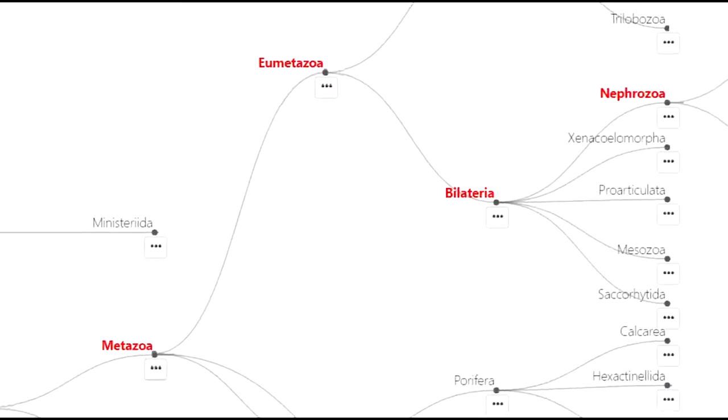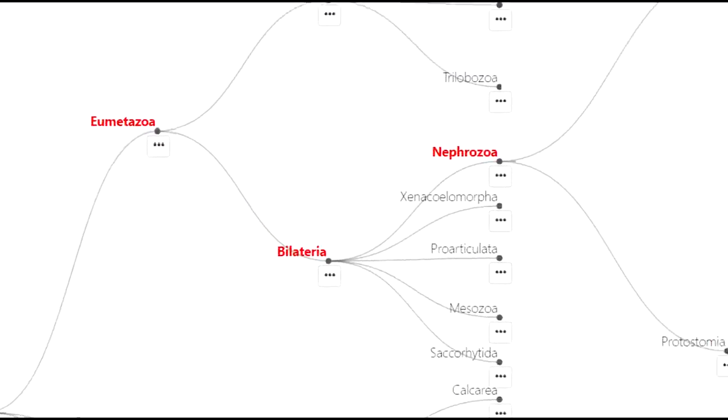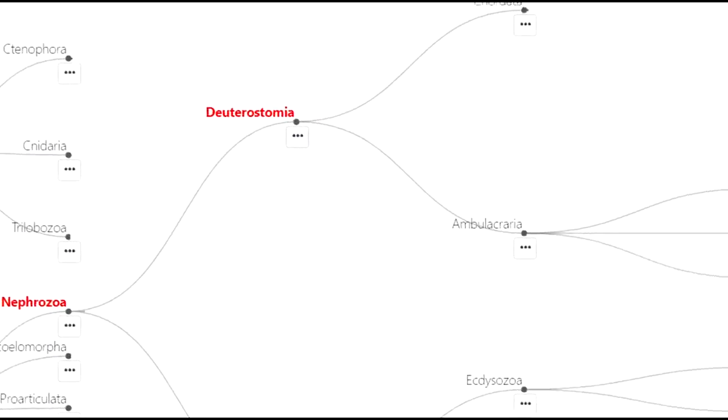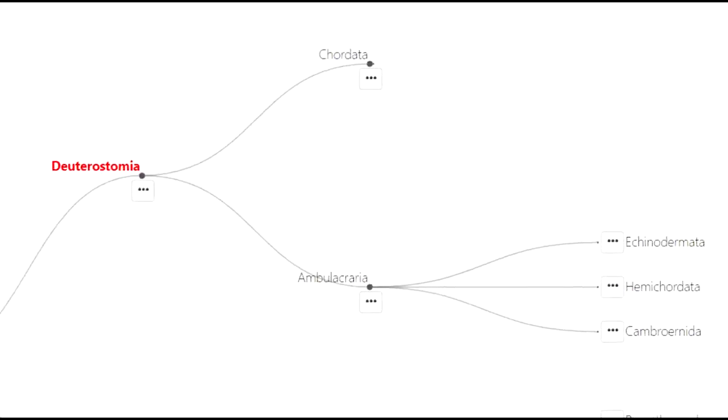You're nephrazoan because those germ layers connect a digestive tract from a mouth at one end to an anus at the other. And you're deuterostome because the embryo develops the anus first and then invaginates that cavity through to the other end to the mouth.